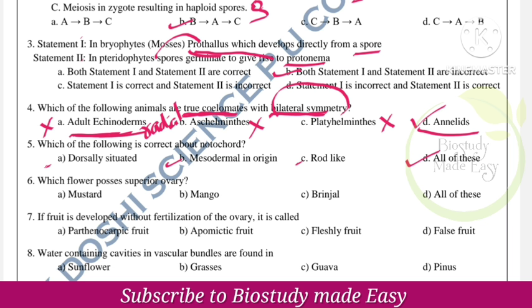Which flower possesses a superior ovary? There are three types of flowers based on the position of the ovary: hypogynous, epigynous, and perigynous. Note the examples for each type — the answer for superior ovary will be discussed in the comments.